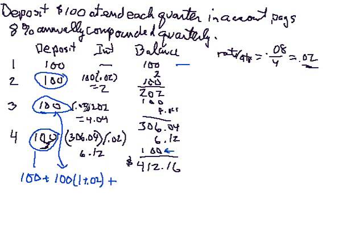What about this $100? This $100, it was compounded twice. It was in the 202 and then that was compounded and it was also included in the 306. So it got compounded twice.